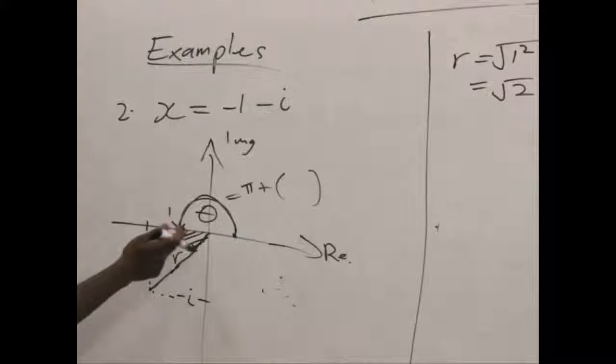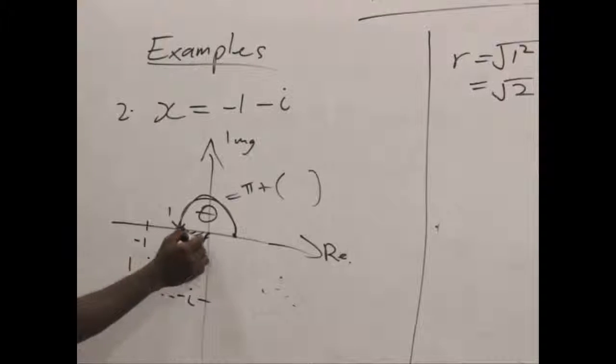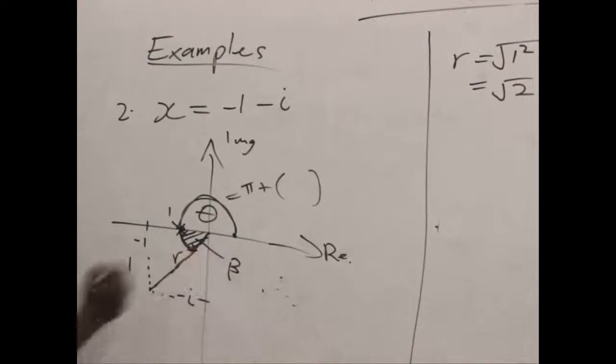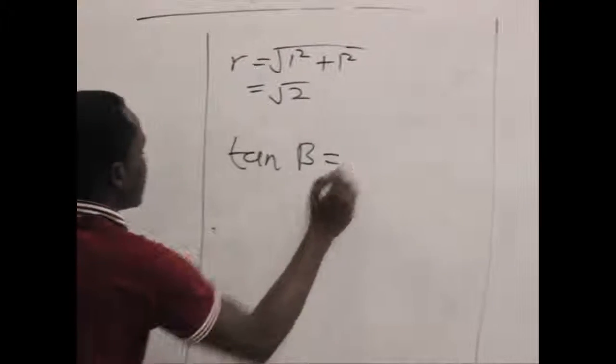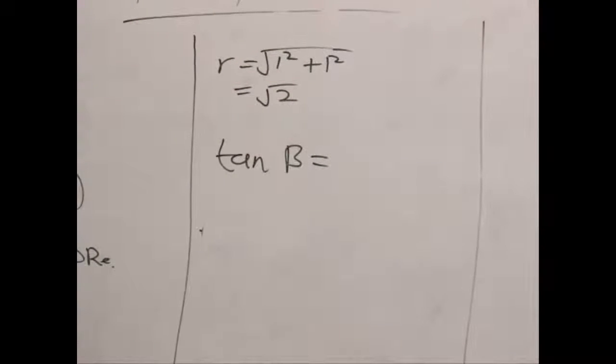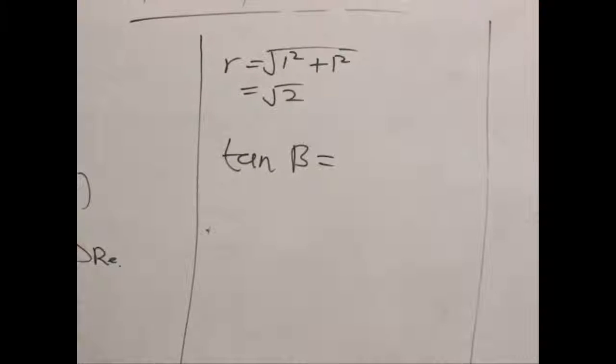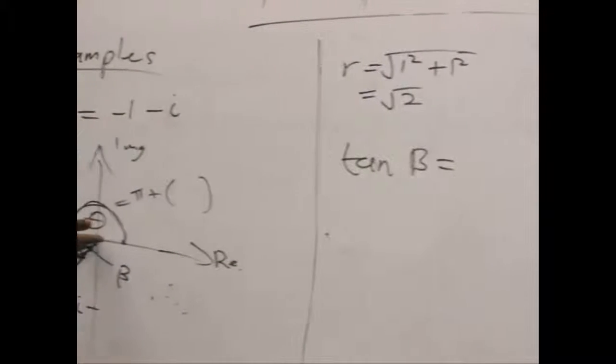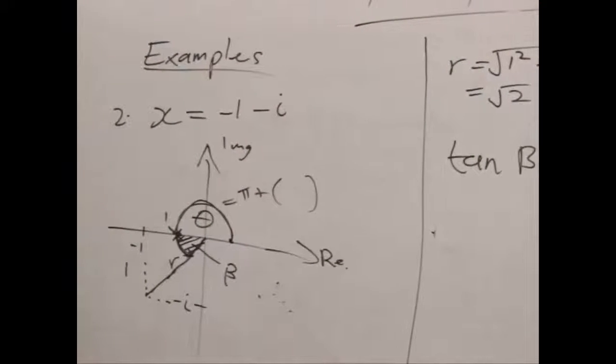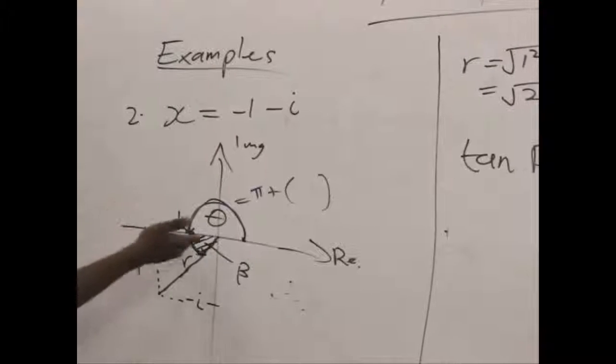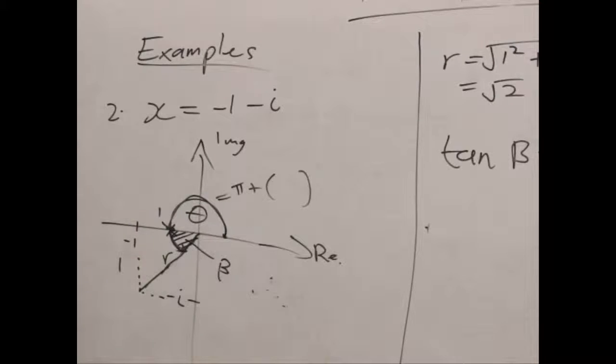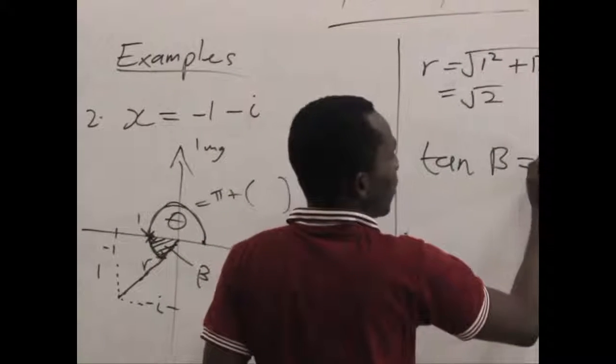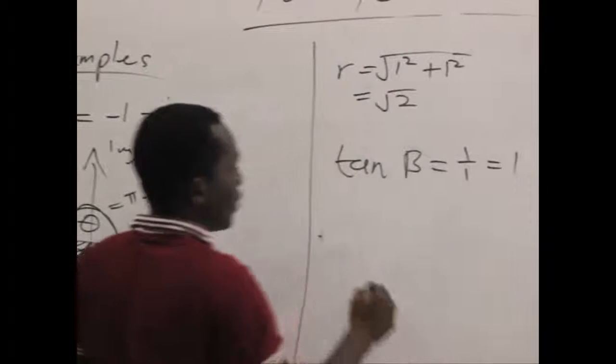So let's label the shaded region as a beta which we define. So tan beta which falls within these fragments will be the opposite here over the adjacent. And the opposite is 1, the adjacent is also 1. So tan beta is still 1 over 1 which is equal to 1.